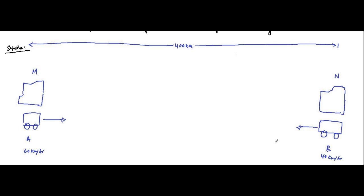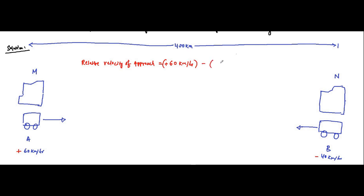This is based on the concept of relative velocity, so here we have to put signs. Car A is moving towards the right side, so it will have a plus sign: plus 60 kilometers per hour. Car B is moving towards the left side, so it will have a minus sign: minus 40 kilometers per hour. As they are moving towards each other, we calculate the relative velocity of approach, which is equal to 60 minus (minus 40) = 100 kilometers per hour.